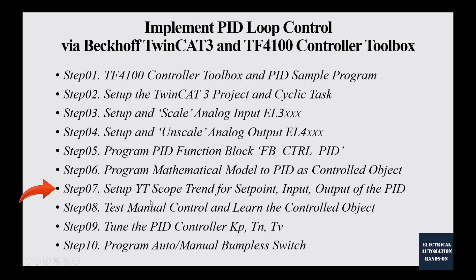In step 7, I will use the scope trend to monitor the set point, PID input, and output so we can observe the performance of the PID control. In step 8, I will test the manual control and show how to manually control the PID output. Through this manual control, we can use the step response to observe the behavior of the controlled object — a second-order overdamping system. In step 9, I will show how to tune the PID parameters: gain, integration, and derivative, based on this second-order overdamped controlled object simulating a temperature system. And in step 10, I will introduce how to program the auto-manual bumpless switch.